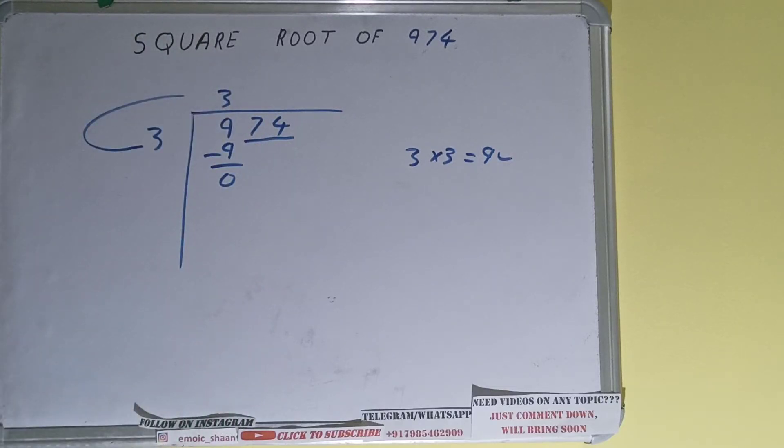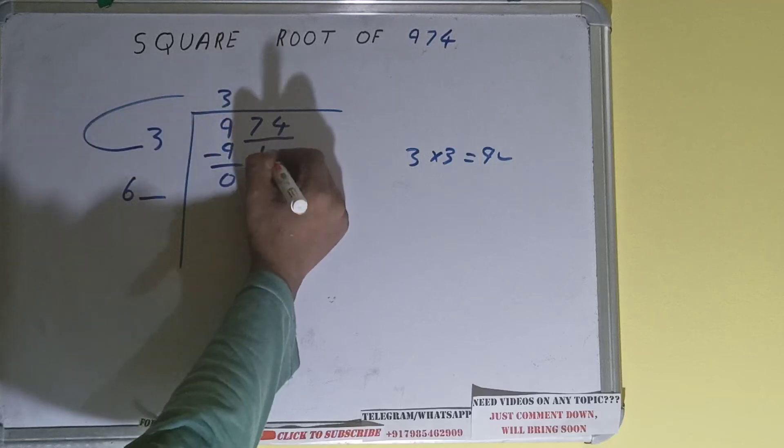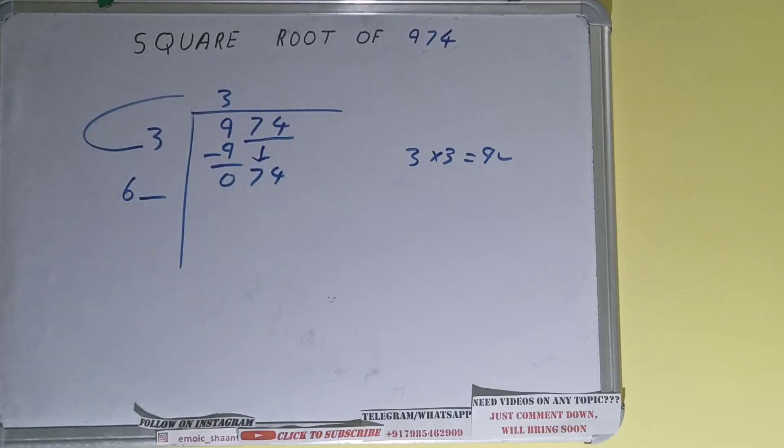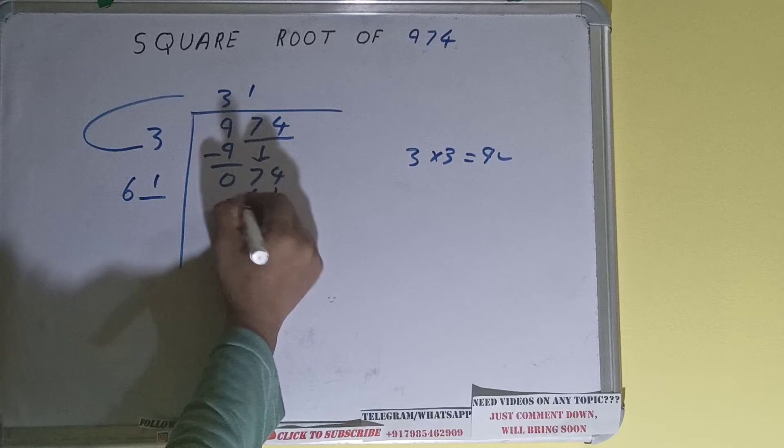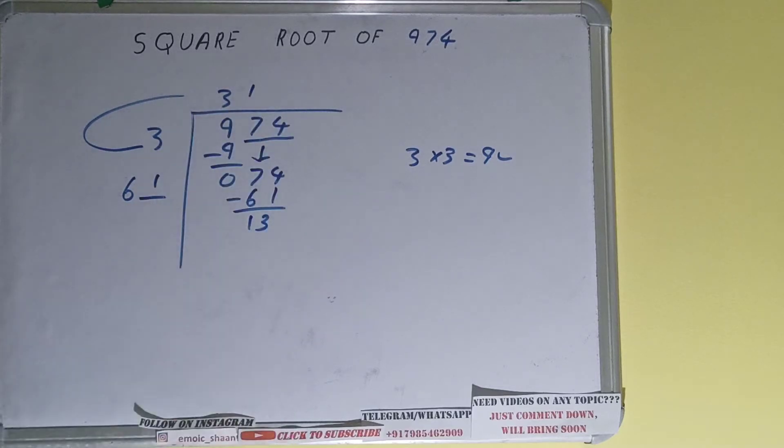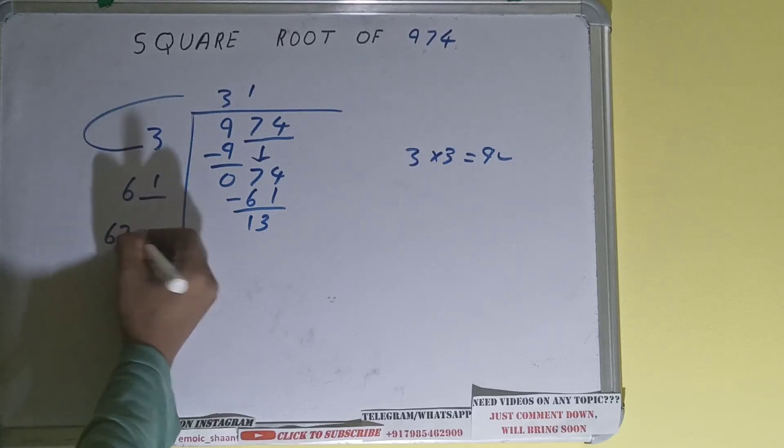And this number we need to make it big, so bring the next pair down and it will become 74. Now whatever number we write here, we have to write here also. So if we write 1 here and 1 here, it will be 61. Subtract and 30 will be left. Now 61 into 1, so add both: 61 plus 1 will be 62 and one digit extra.